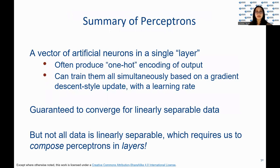Perceptrons are a vector of artificial neurons in a single layer that often produce one-hot encoding of the outputs. One-hot encoding in machine learning is the conversion of categorical information into a format that may be fed into machine learning algorithms to improve prediction accuracy. Perceptrons can be trained simultaneously based on a gradient descent style update with a learning rate. However, they are guaranteed to converge only for linearly separable data. For non-linearly separable data, perceptrons need to be composed in layers to achieve better results.